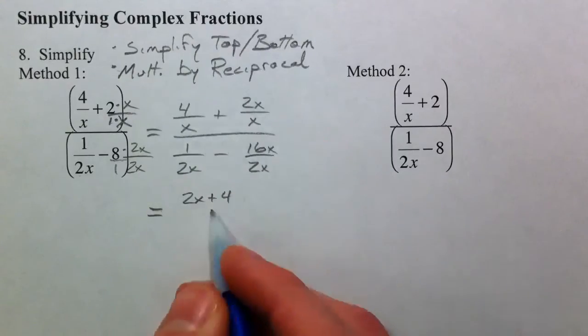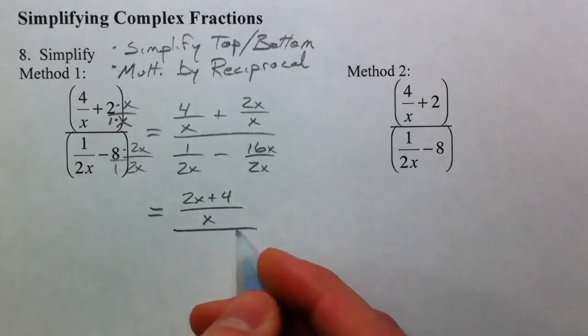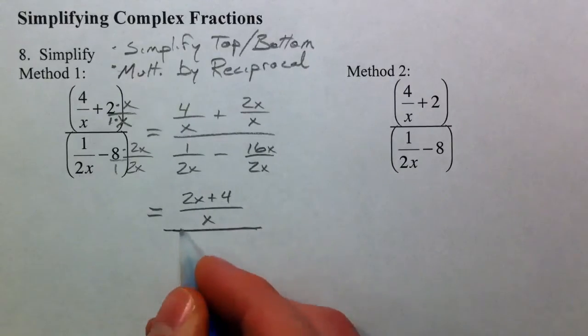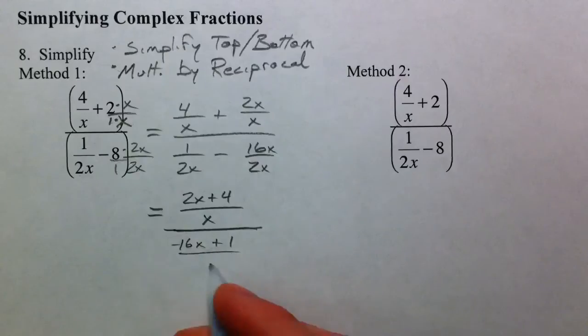So we get 2x plus 4, and I'm just writing it in standard form, divided by x. Over this is this fraction on top, and then 1 minus 16x, or negative 16x plus 1, over 2x.